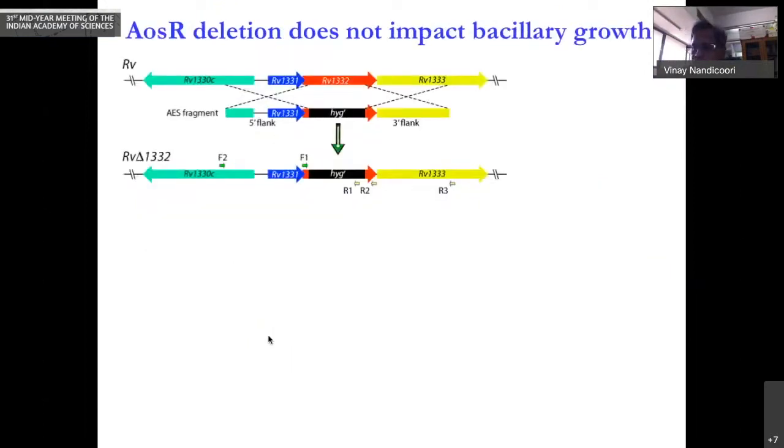How does one characterize anything in bacteria? One of the things is to generate tools, creating a knockout. That is precisely what we have done. You can generate knockout if it is a non-essential gene, which this one is. We replaced the transcription factor with an antibiotic hygromycin. You can very clearly see that. And after that, we select the colonies on hygromycin.